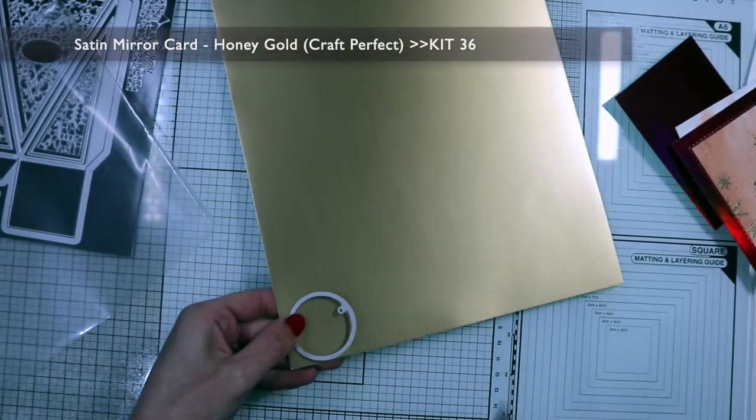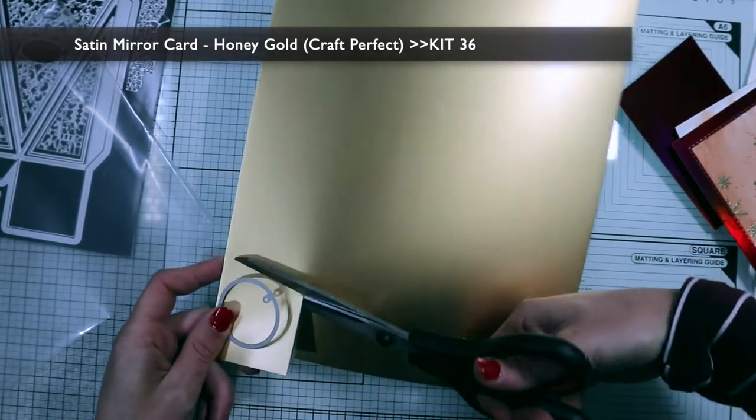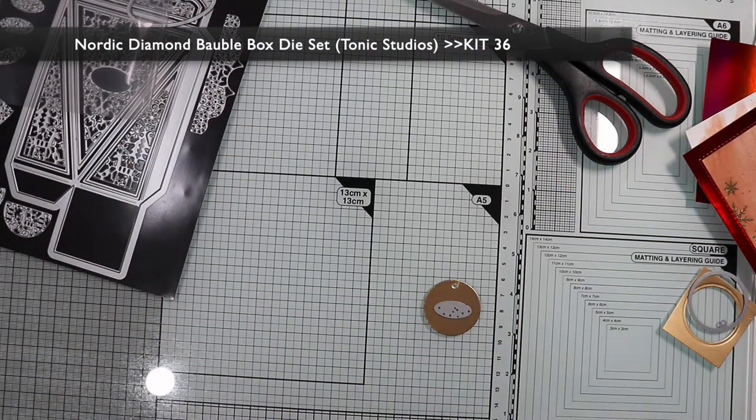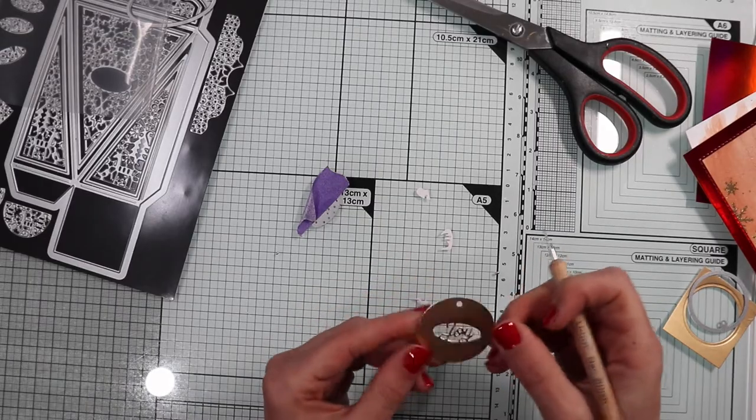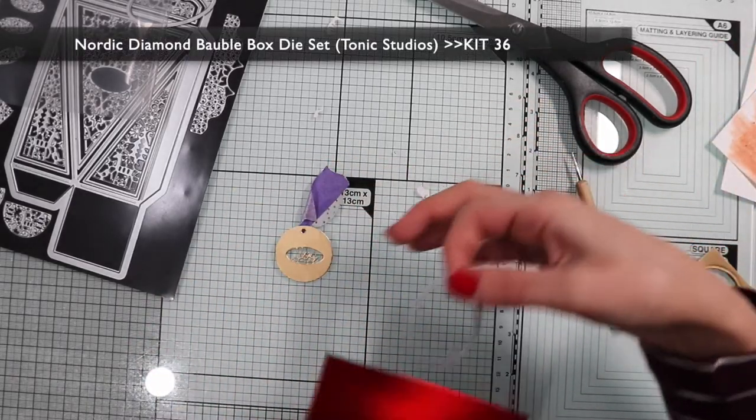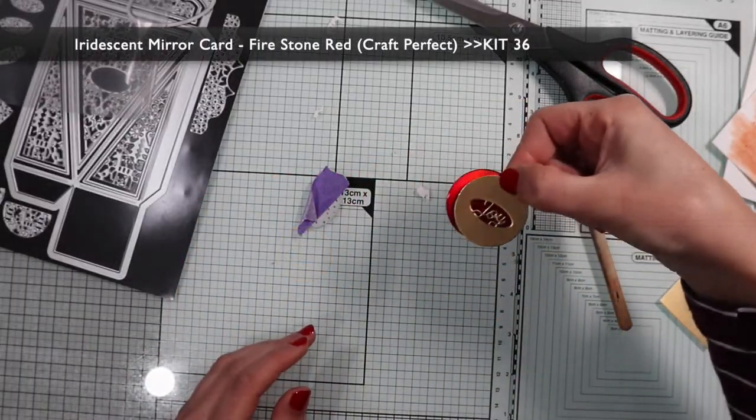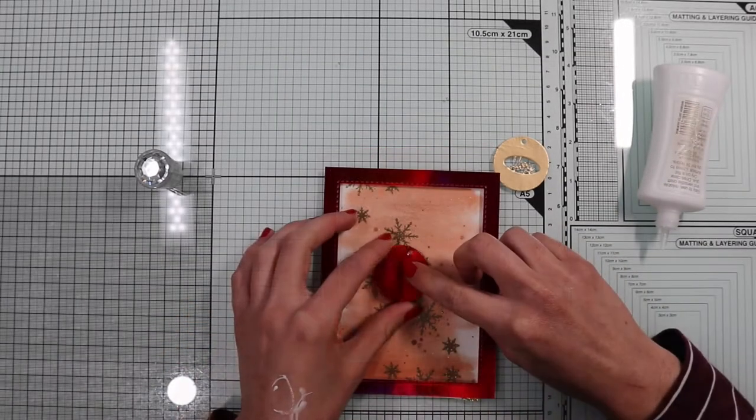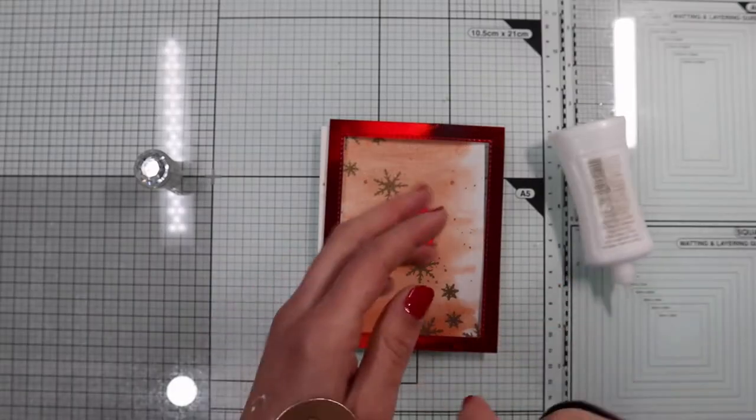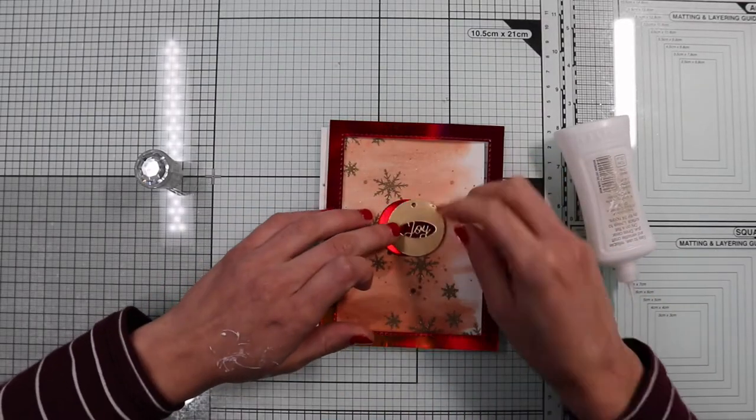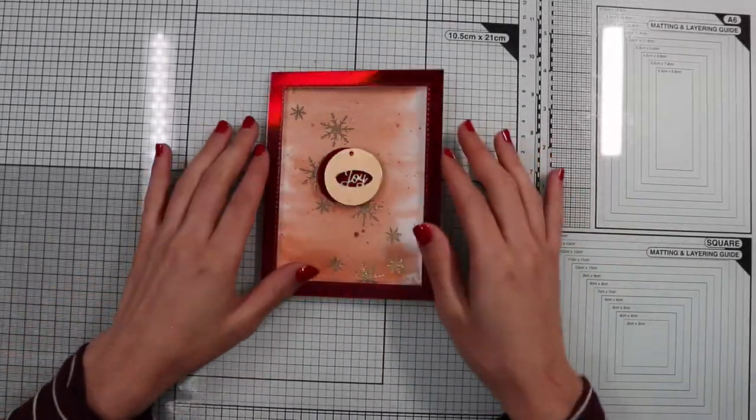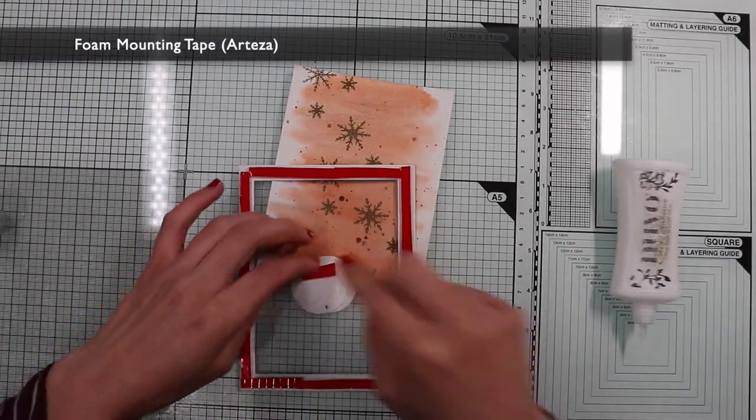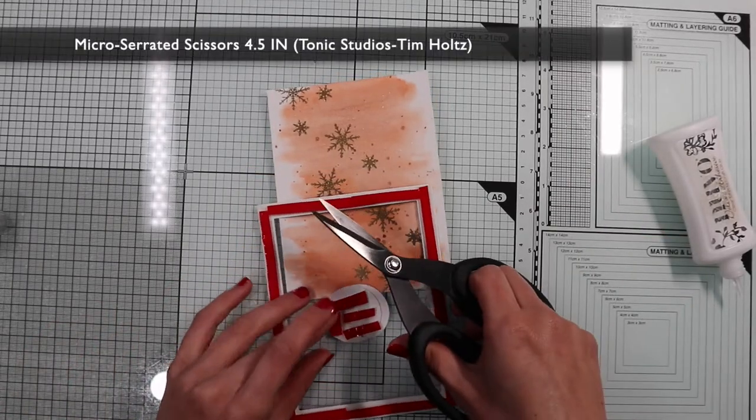Before assembling everything, I'm going to create a decorative element for the card that will contain the sentiment. Then I die-cut the round tag onto the gold satin paper, to then die-cut Joy directly on the tag. I also create another tag on the iridescent red cardstock. I'm going to glue the tag in the middle of the card. In addition to a decorative element, this tag will allow me to glue another piece of foam tape on the back, making the acetate more stable even on the center.